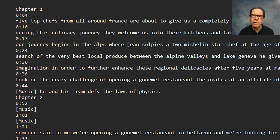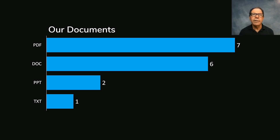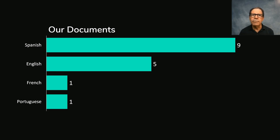Let's double check what we have here. There are seven documents that are PDFs, six are doc files, two are PowerPoint, and one is the text file we created from the video. That should all be fine. It turns out that most of the documents we downloaded are actually in Spanish. Five of them are in English, and there's one in French and one in Portuguese. That should be fine too.